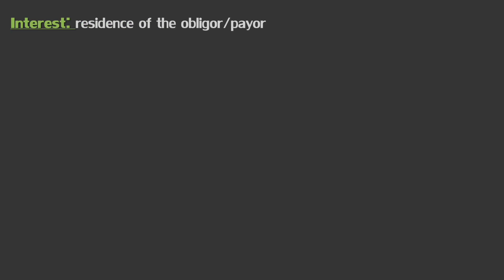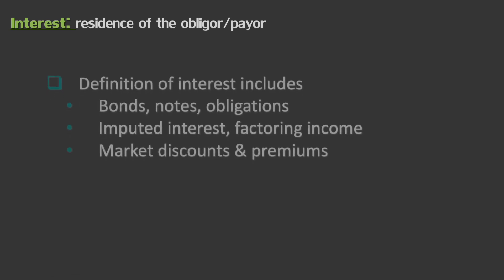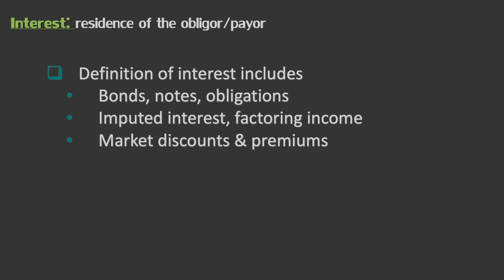Interest income recorded on the U.S. tax return is sourced based on the residence of the payer of the interest. To the extent a U.S. company lends to a foreign person or corporation, the interest received on those loans, bonds, or other obligations would be considered foreign source. Remember that we're using our U.S. tax return as a base. So if there's interest not necessarily recorded on the books under U.S. GAAP, but maybe imputed under Section 482, or if there are items similar to interest like discounts, those would also be sourced based on the residence of the one obliged to pay.